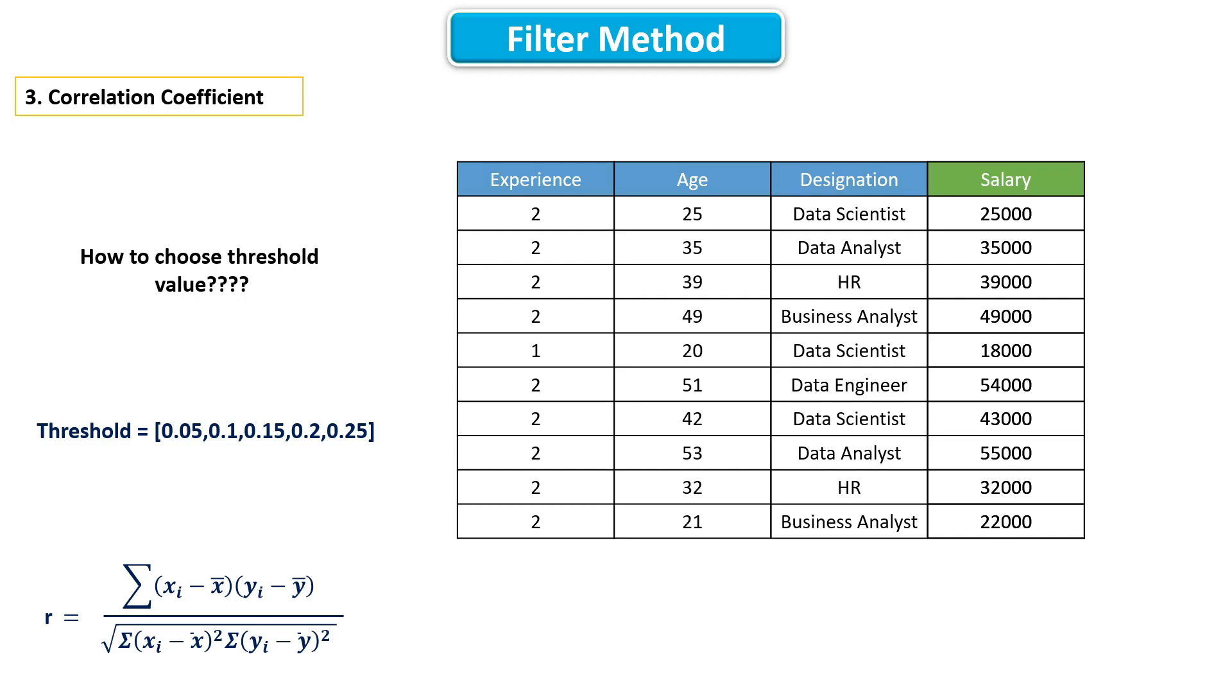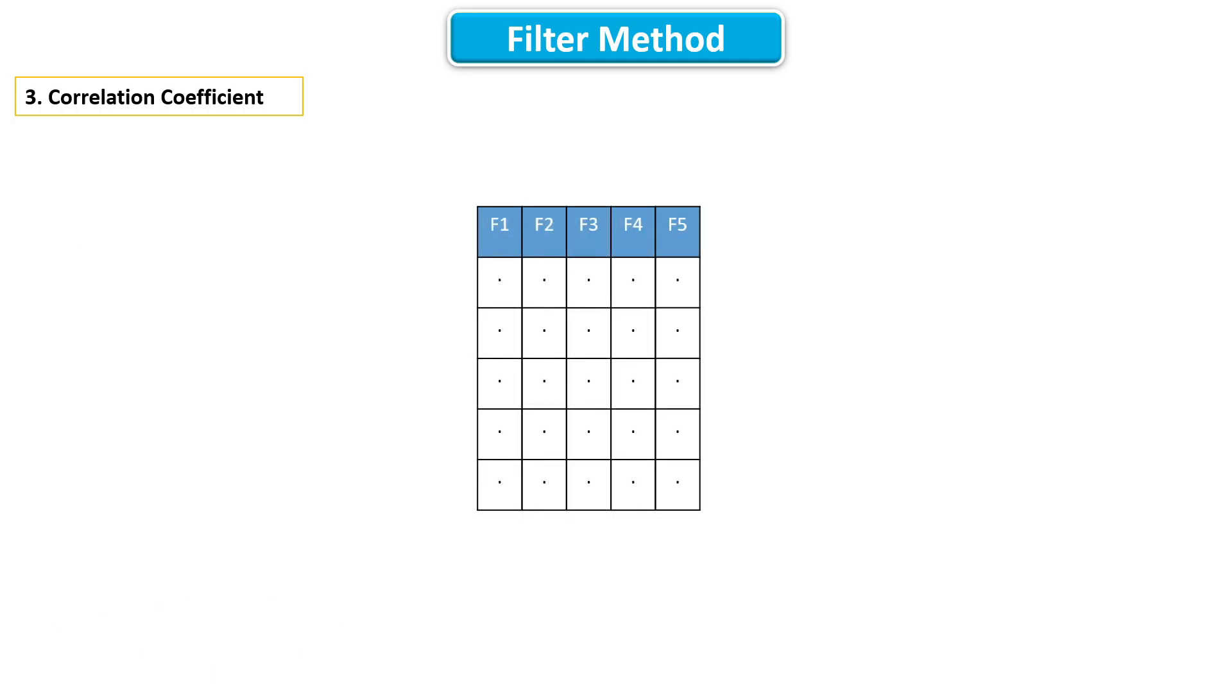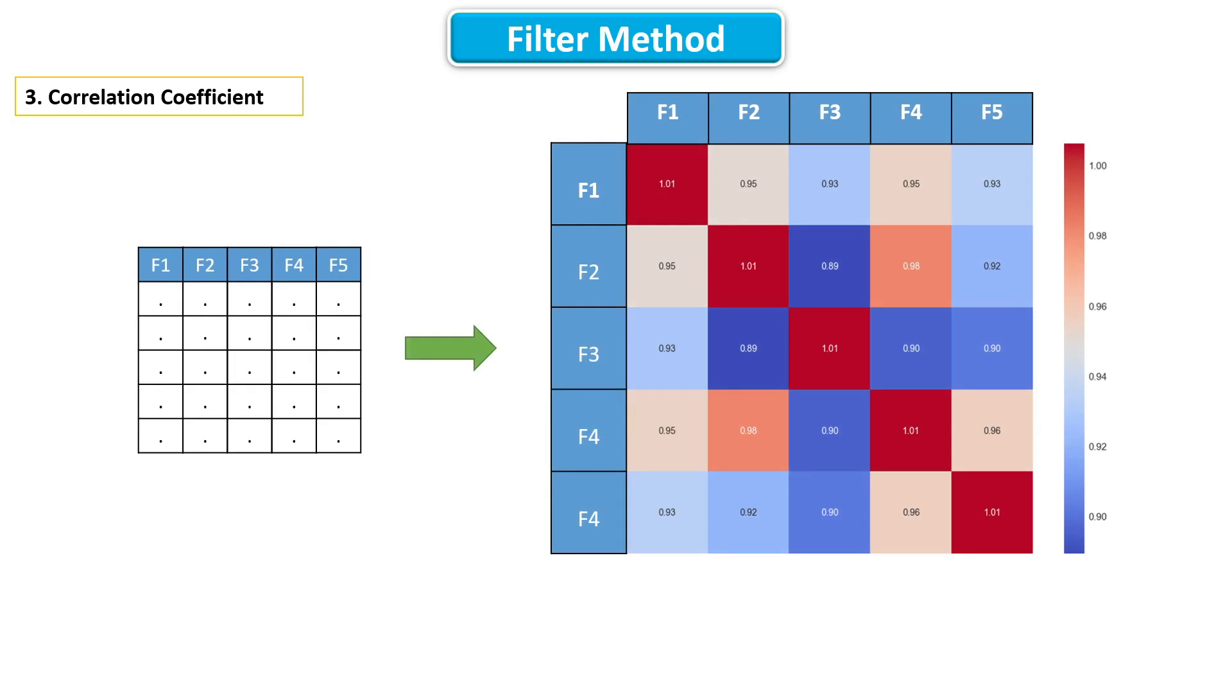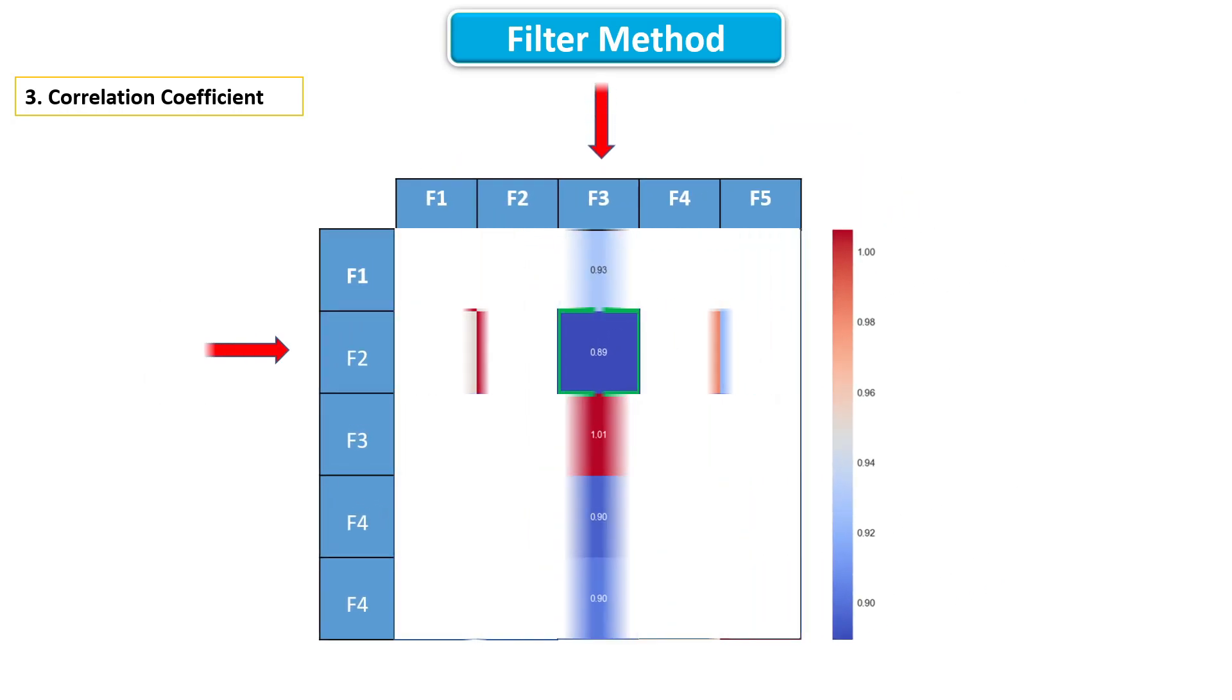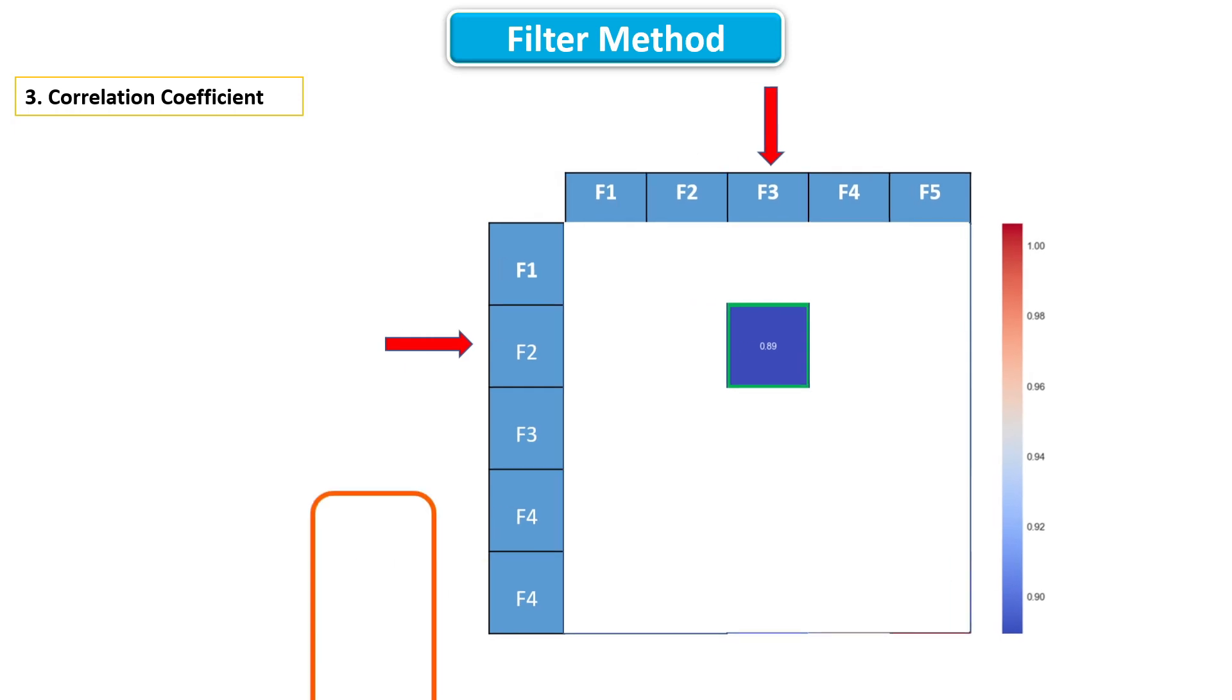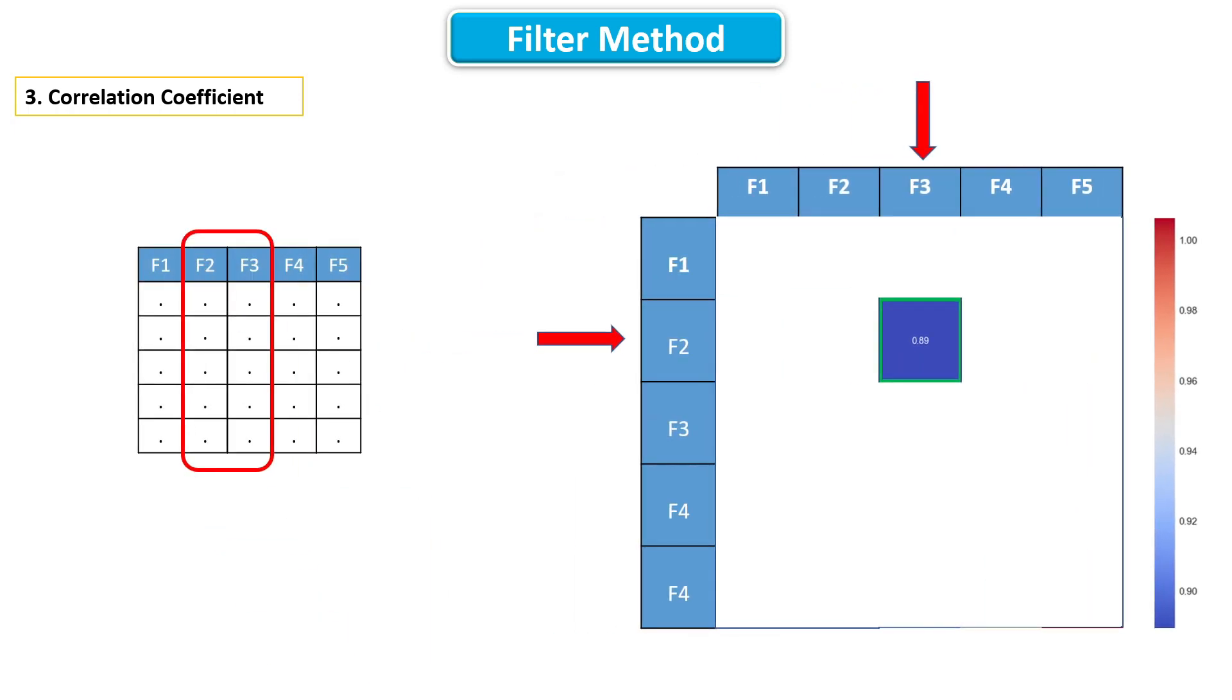And also there is another way to do feature selection using correlation. Take all your numeric features and compute correlation matrix. Then find out the features which are highly correlated. If two features are highly correlated, which indicates that they are giving us equal amount of information. If two features are giving us equal amount of information, then simply we can drop either one of those features. It makes sense, right?